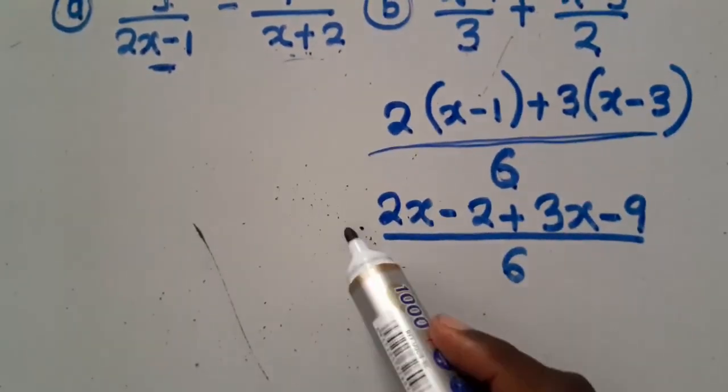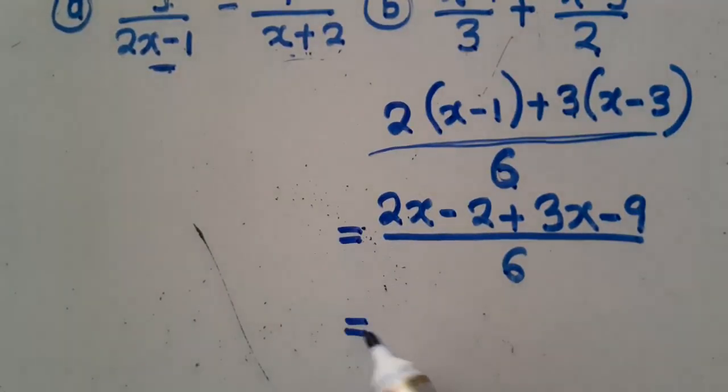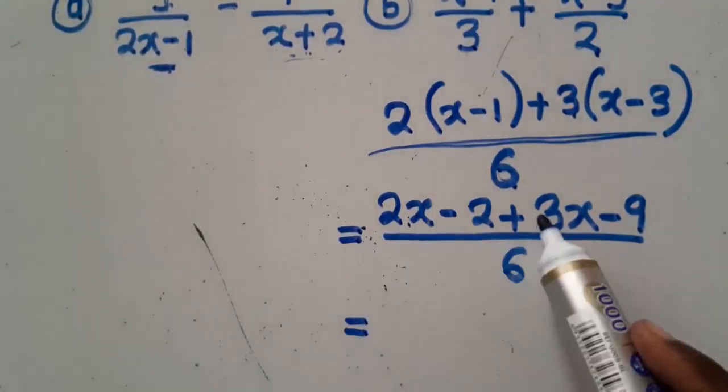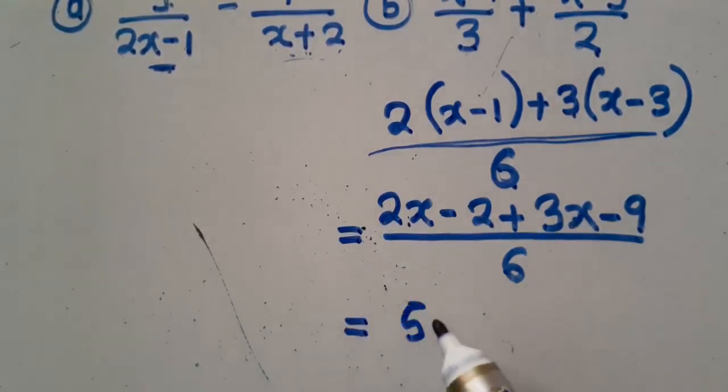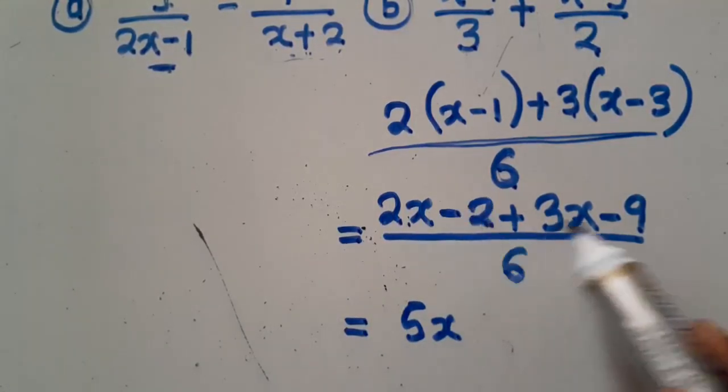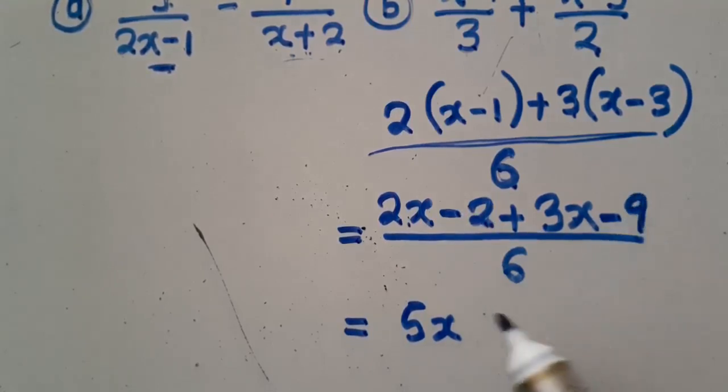If you evaluate, this is equal to here. 2x plus 3x, that is 5x. Negative 2 minus 9, that is negative 11. Then you say over what? Over 6.